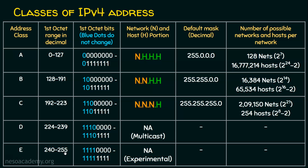To recap: the first octet ranges from 0 to 255, covering all five classes. Classes A, B, and C are for general purpose use. Class D is reserved for multicasting, and Class E is reserved for experimental and research purposes. We will cover these details elaborately in the next lecture; this lecture focuses on how many classes exist and how each is identified.